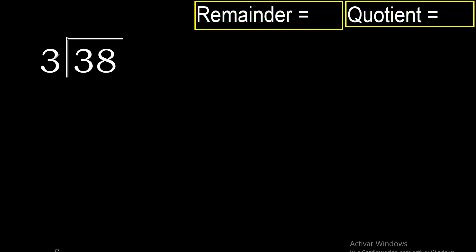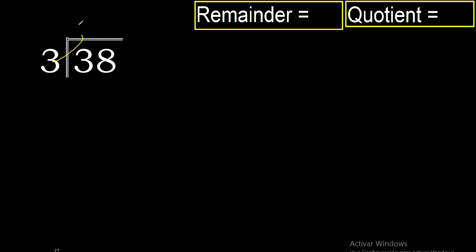38 divided by 3. 3 is not less than 3, therefore work with 3. 3 multiplied by 2 is 6 — excessive. 3 multiplied by 1 is 3.